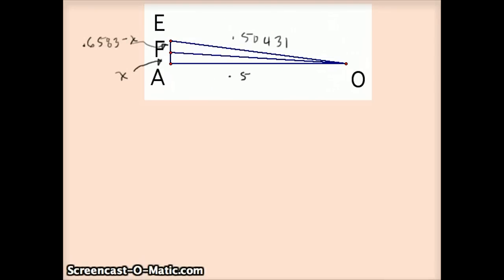So, here's an enlarged picture of that triangle. AE is 0.06583. So, if I call AF X and FE 0.06583 minus X, Pythagorean theorem gives me that OE is 0.50431. And now I'm going to use the angle bisector theorem.